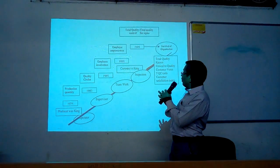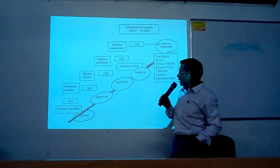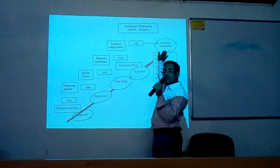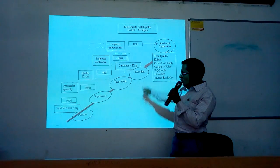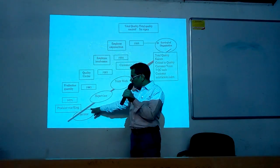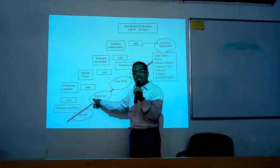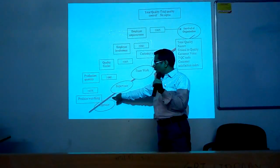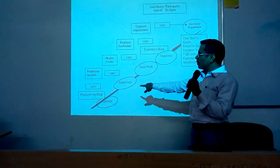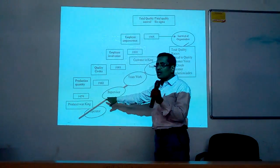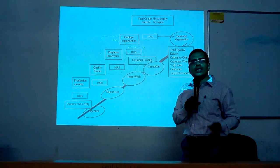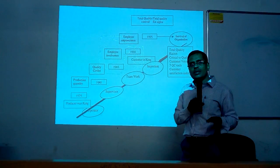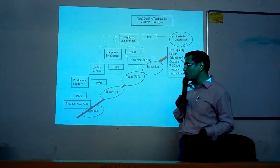This is the journey of TQM and Six Sigma. It started from 1975, going up to 1995, 2000, and beyond. In 1975, the producer was the key — there was monopoly in the market, very few producers, and whatever they produced was sold. The price was decided by the producer.